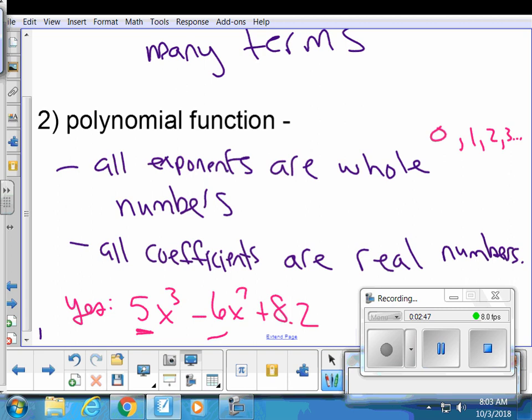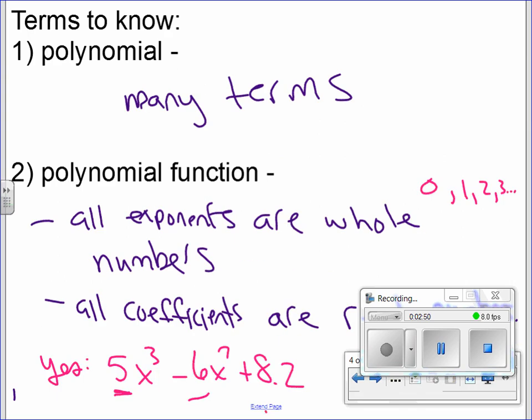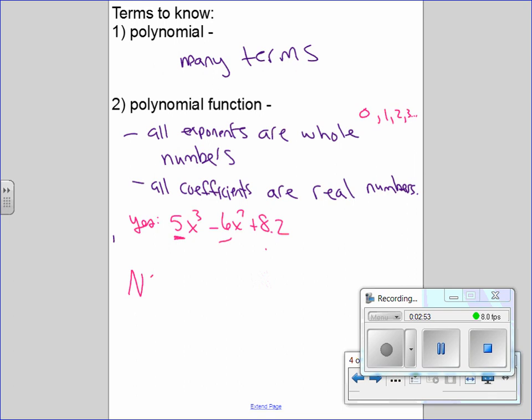Let me show you something that would not be a polynomial function. I'll actually break both rules just to make a point. I'll make an exponent that is not a whole number: 6x^2.5, so that exponent is not a whole number. And then I'll show you a coefficient that would not be a real number: minus negative √-4 x². There's an imaginary number, so it's an imaginary coefficient. You need to have a real coefficient, so that would definitely not be a polynomial function.